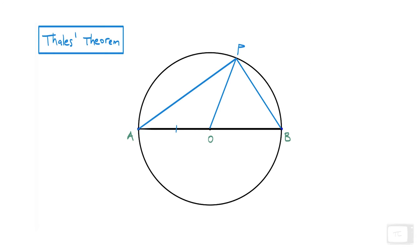Because now we can observe that these are all equal length, and therefore we have two isosceles triangles. By the base angle theorem, we know that these angles will be the same, and these angles will be the same.